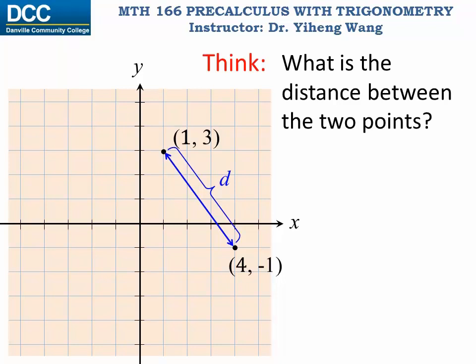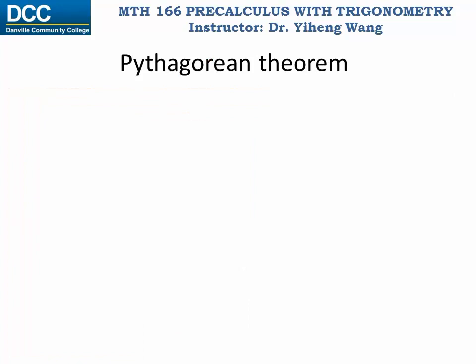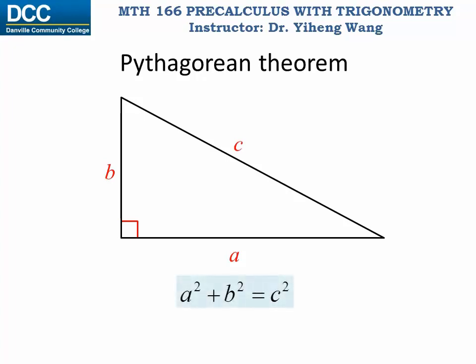To determine that, let's first review the Pythagorean theorem that you learned in basic geometry. The Pythagorean theorem states that for a right triangle, the two perpendicular sides have lengths of a and b, and the hypotenuse side has length of c. The relationship between these three sides must satisfy the equation that a squared plus b squared equals c squared. Or alternatively, c equals the square root of a squared plus b squared.